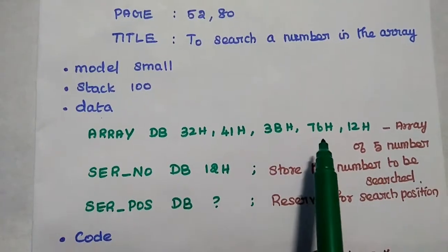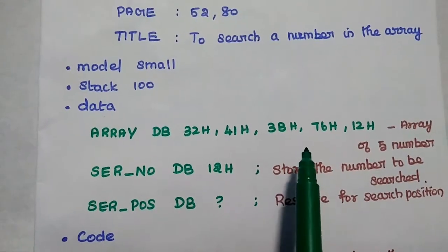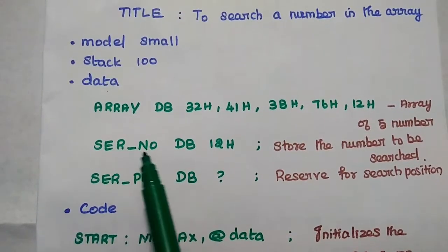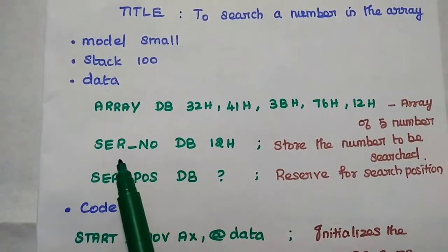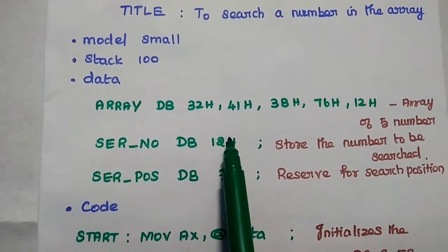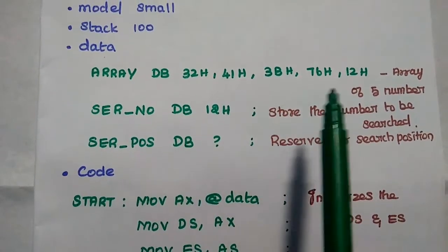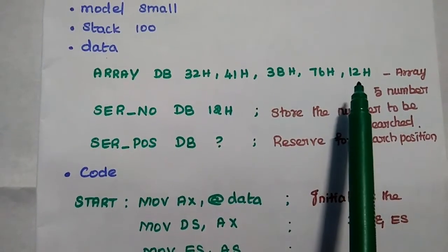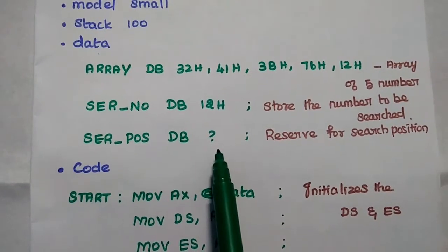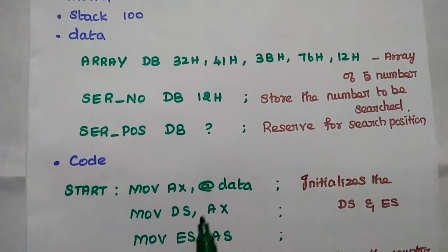The data values directly given in the array are: 32, 41, 3B, 76, 12 — these are 5 bytes stored in the data segment. Next, we define a variable SER_NO, which means search number, to store the number we are looking for. We also define a 'position' variable — if the number is present at a certain position, we identify that position as the output and reserve a memory location for it.